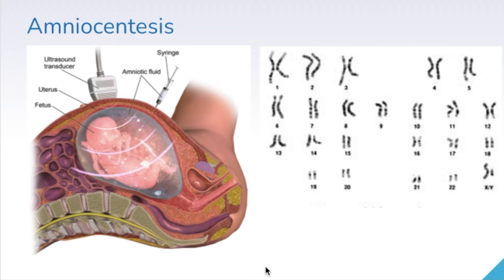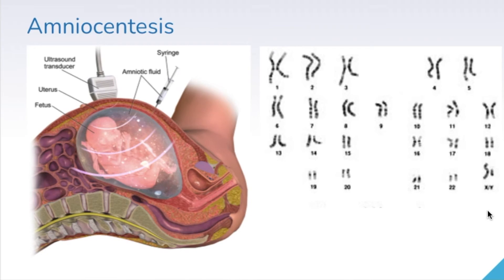Not all women choose to do this because there is a small risk involved in the procedure of amniocentesis. But if you elect to do it, or if you're a high-risk pregnancy, some women will be able to see a karyotype of their child before they're born. A normal human karyotype has 23 pairs of chromosomes, including the sex chromosomes. This individual has all 23 pairs — one X and one Y, so if you look closely, you can see this individual is a biological male.